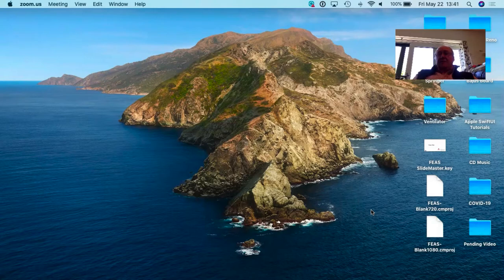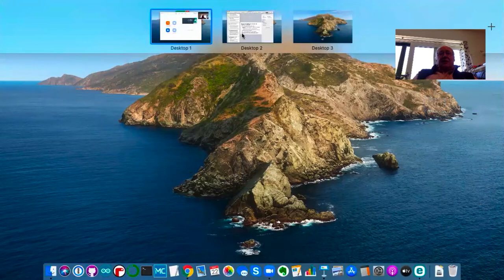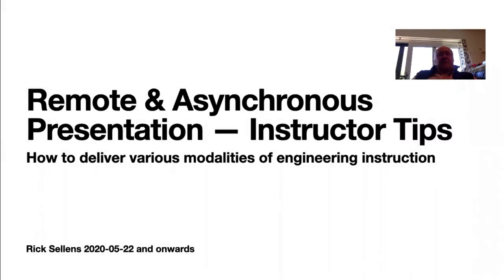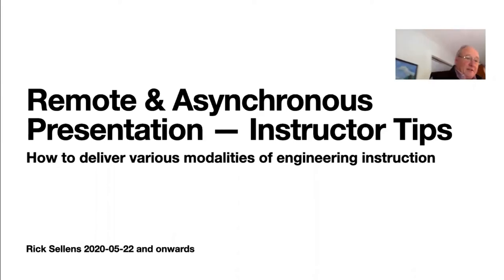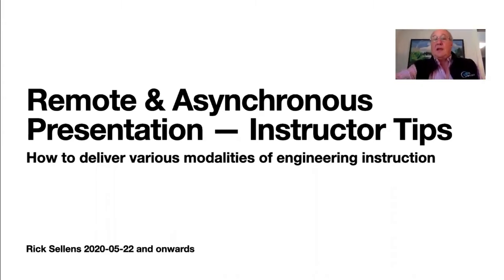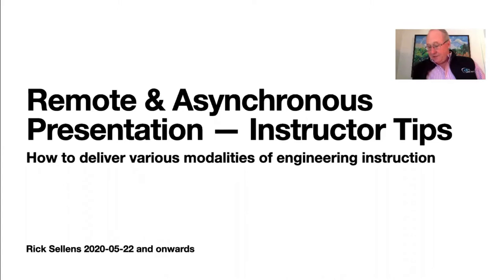It's a lovely day in Kingston, and there's beautiful sunshine behind me, and I'm mostly in silhouette. So the first thing we need to do when we go to give a lecture is try to set the stage a little more appropriately by getting our act together and getting an appropriate background. I'll start my remote and asynchronous presentation by moving over to a desk where I can actually see you. With a little luck, you can see me a little better. I'll plug in my computer so it's got continuous power supply, and I'll adjust my screen so that it's showing me in the video.